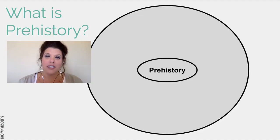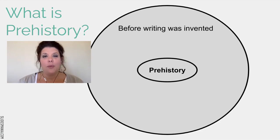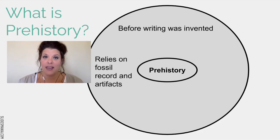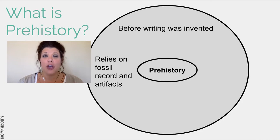We're dealing with prehistory here, so what does prehistory mean exactly? Well, prehistory occurred before writing was invented. Historians, archaeologists, and scientists rely on the fossil record and artifacts that they've been able to excavate in order to help them get a picture of what early prehistoric life looks like.